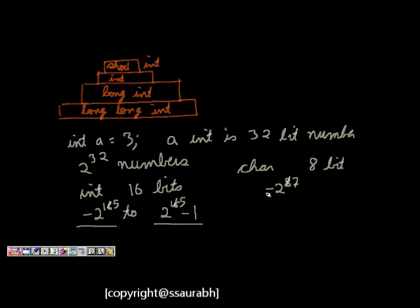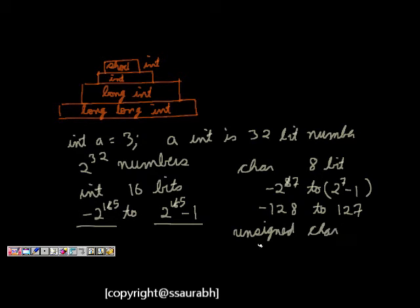This is minus 2 to the power of 7 to 2 to the power of 7 minus 1, which means minus 128 to 127 is the character range. But if I make it unsigned char, now the range will be 0 to 255 because it's positive only.